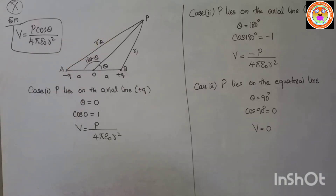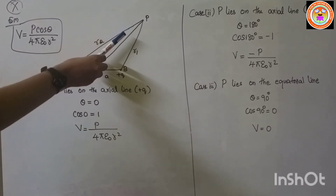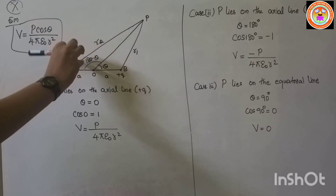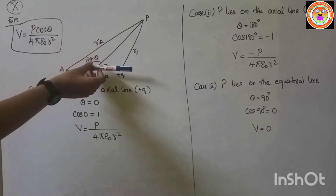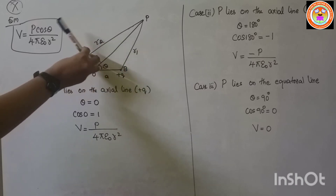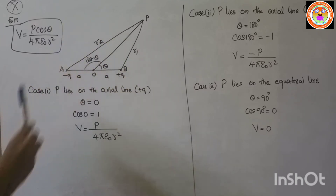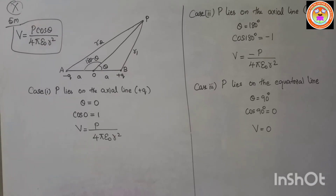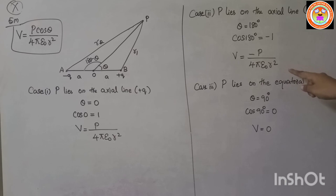Case 2: Point P on the axial line of the electric dipole on the side of the negative charge. Here theta = 180°, so cos 180° = −1. Therefore V = −p / (4πε₀ r²).